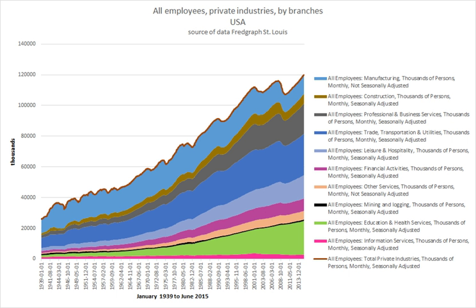Larger unions also typically engage in lobbying activities and electioneering at the state and federal level. Most unions in America are aligned with one of two larger umbrella organizations, the AFL-CIO created in 1955, and the Change to Win Federation which split from the AFL-CIO in 2005. Both advocate policies and legislation on behalf of workers in the United States and Canada, and take an active role in politics. The AFL-CIO is especially concerned with global trade issues.